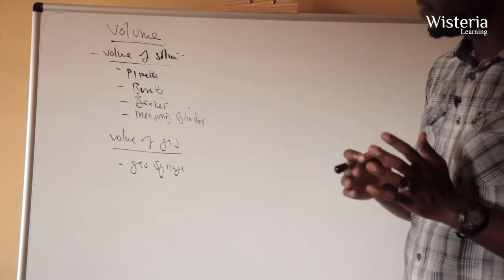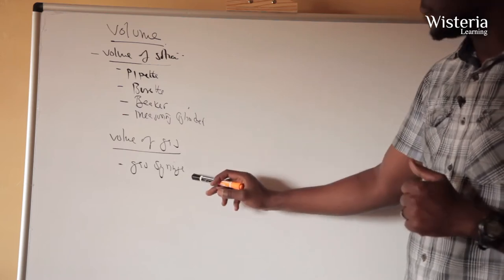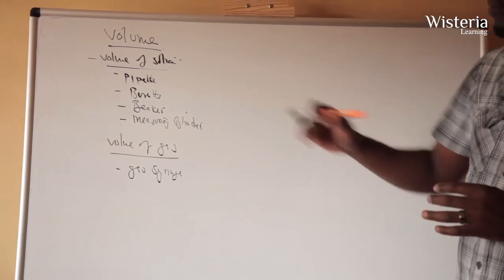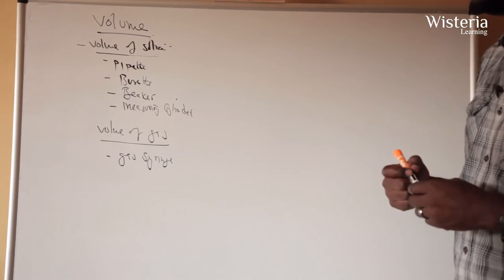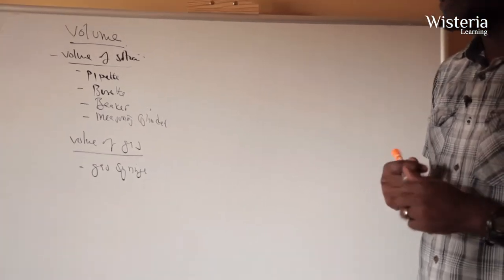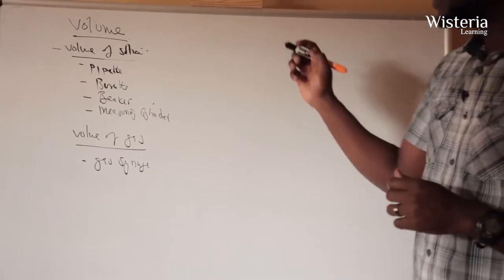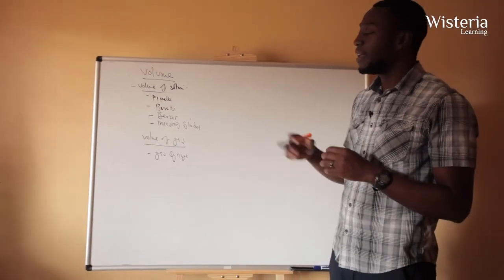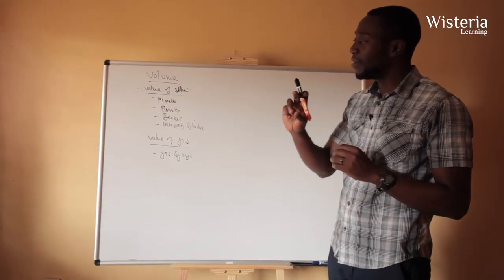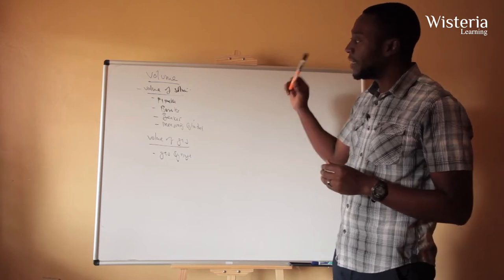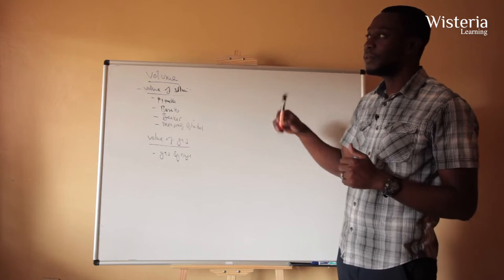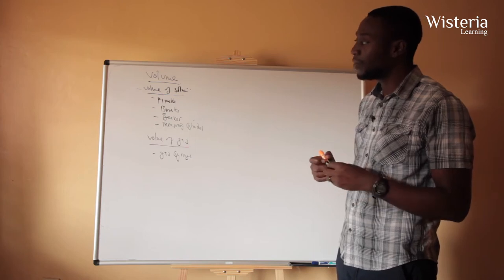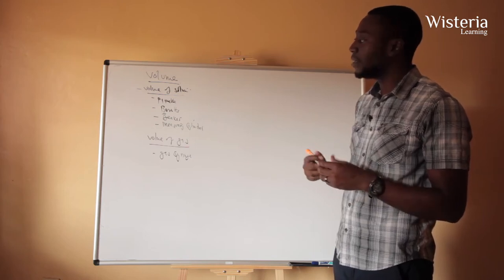If we want to measure the volume of a gas we usually use a gas syringe. Now since we know the apparatus we are using, we have to know what units we are going to use for volume. The SI unit for volume is the meter cubed, but in chemistry we usually use centimeter cubed because the apparatus we use can only measure small amounts of liquids. We also use liters or cubic decimeters.